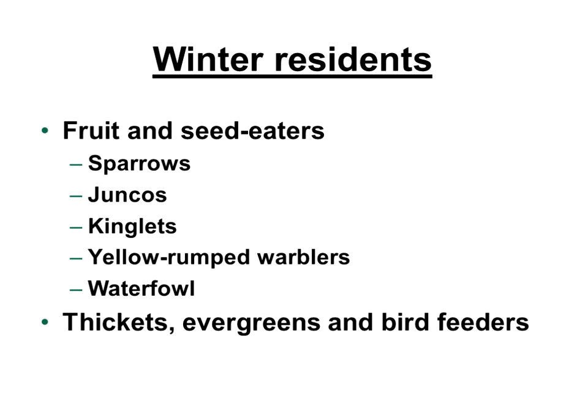The next group of birds are what I call winter residents. These birds shift north and south like neotropical migrants, but they shift further north — during the breeding season they're breeding to our north, but they spend their winters here. This includes many species of sparrows, our dark-eyed junco, ruby-crowned and golden-crowned kinglets, yellow-rumped warblers that are attracted to wax myrtle, and then our waterfowl — swans and many duck species. These birds can be attracted to a backyard with dense vegetation that provides cover, especially evergreen vegetation, and bird feeders.